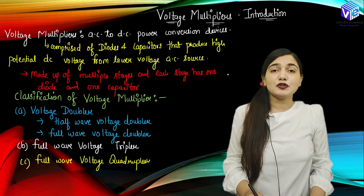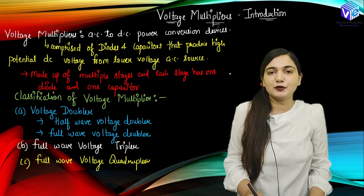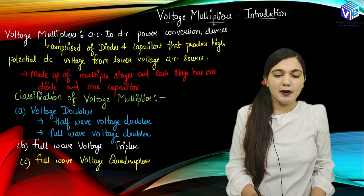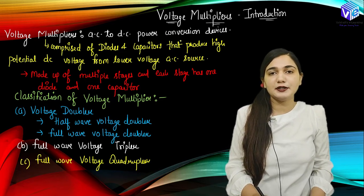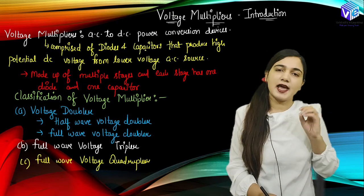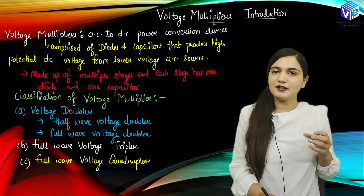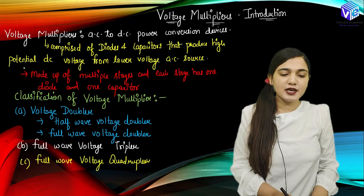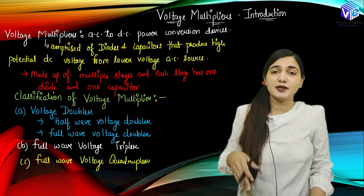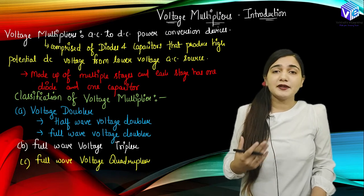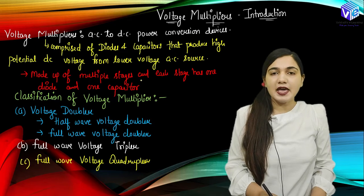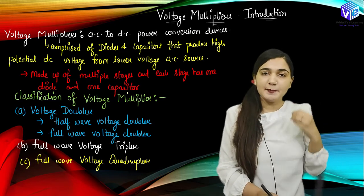What are voltage multipliers? As the name suggests, it is going to multiply the voltage. If the input voltage is V, it is going to give 2V, 3V, 4V, 5V depending upon our requirement. Voltage multipliers are AC to DC power conversion devices — they convert the AC signal into the DC signal. The circuit is composed of diodes and capacitors, and they produce high potential DC voltage from a lower voltage AC source. For example, if the AC peak-to-peak voltage is just 2V, I can convert it to 10V with the help of voltage multipliers. It is made up of multiple stages.